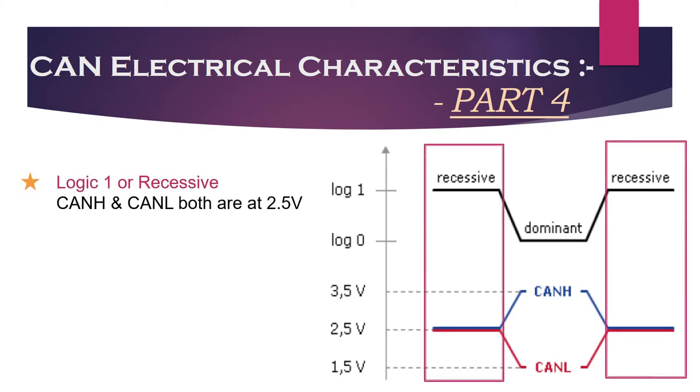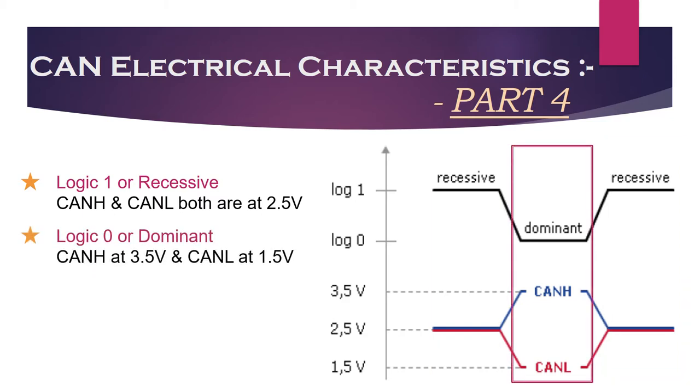Logic 1 is called as recessive state. So to transmit 1, CAN high and CAN low line both should be applied with 2.5V. Logic 0 is called as dominant state. To transmit 0, CAN high line should be pulled up to 3.5V and CAN low line should be pulled down to 1.5V.